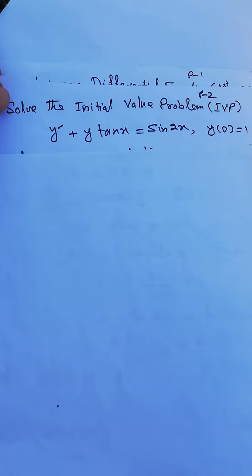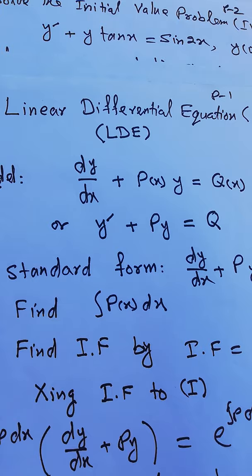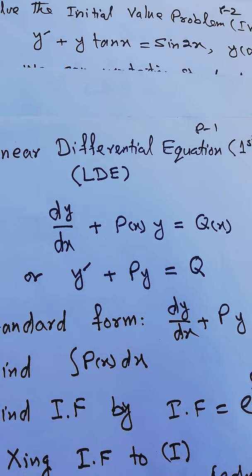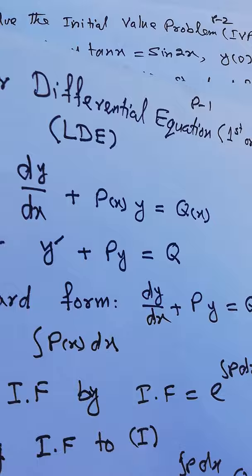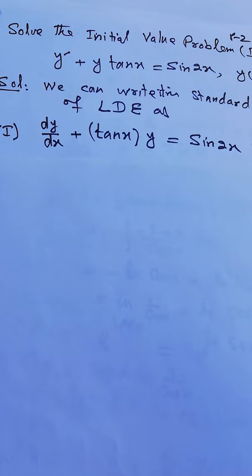This is the initial value problem and we are going to solve it using the procedure for linear differential equations. We need to write the equation in standard form: dy/dx plus P(x) times y is equal to Q.